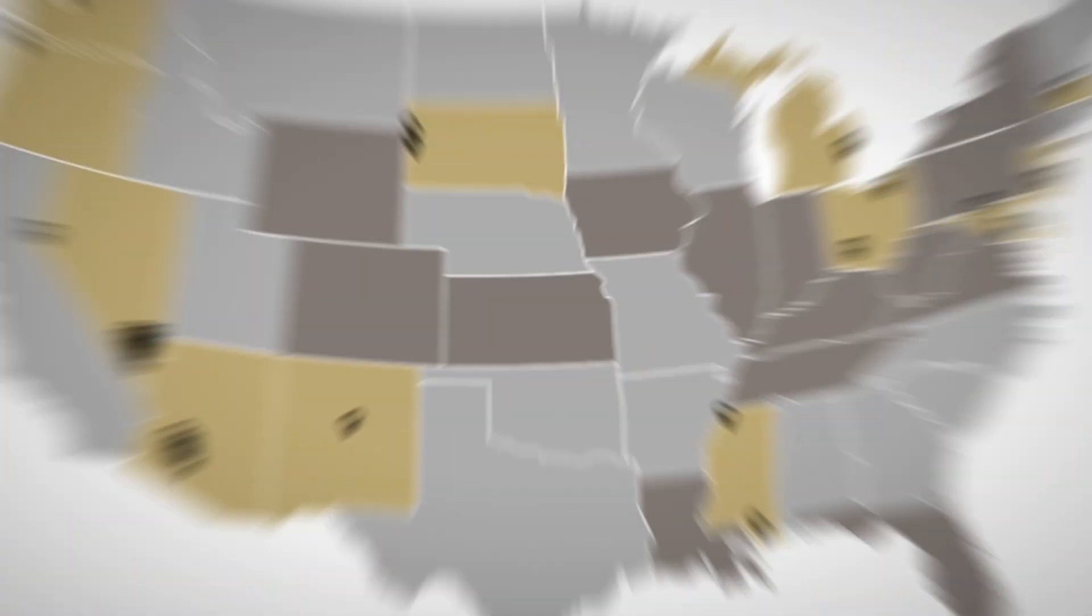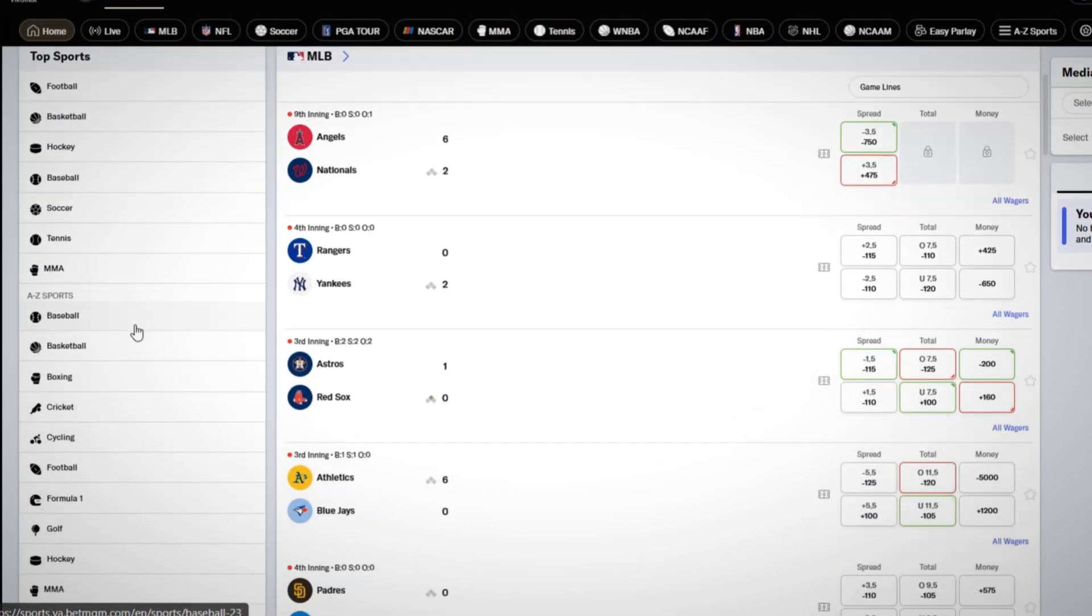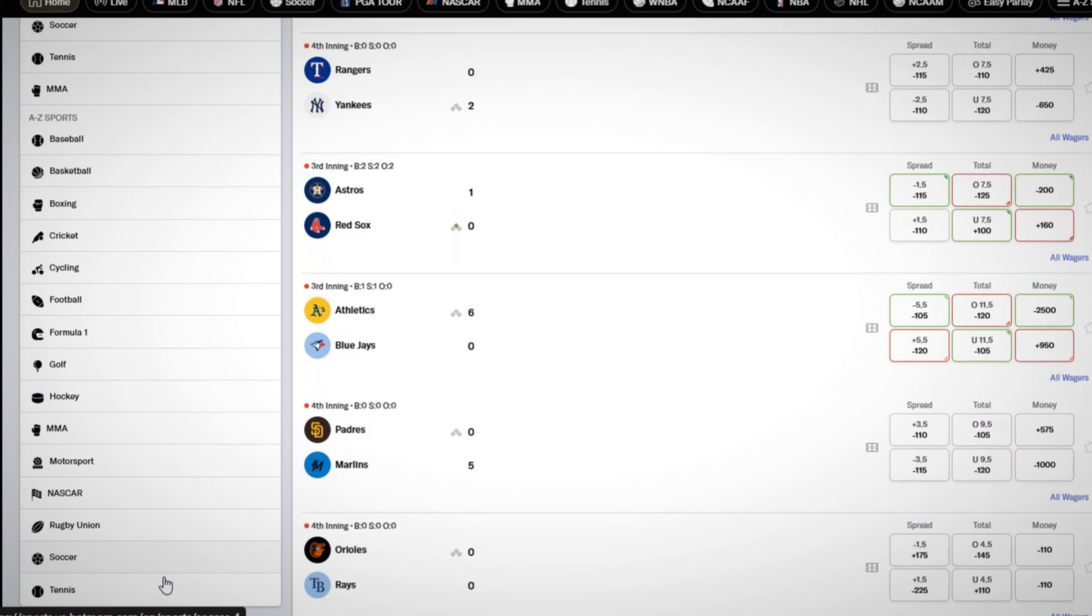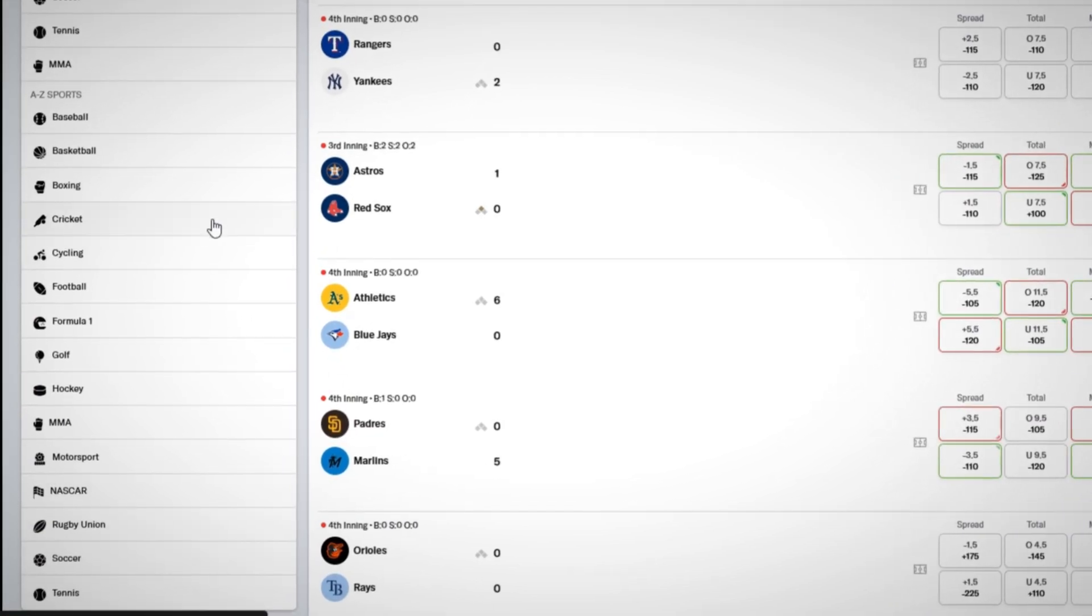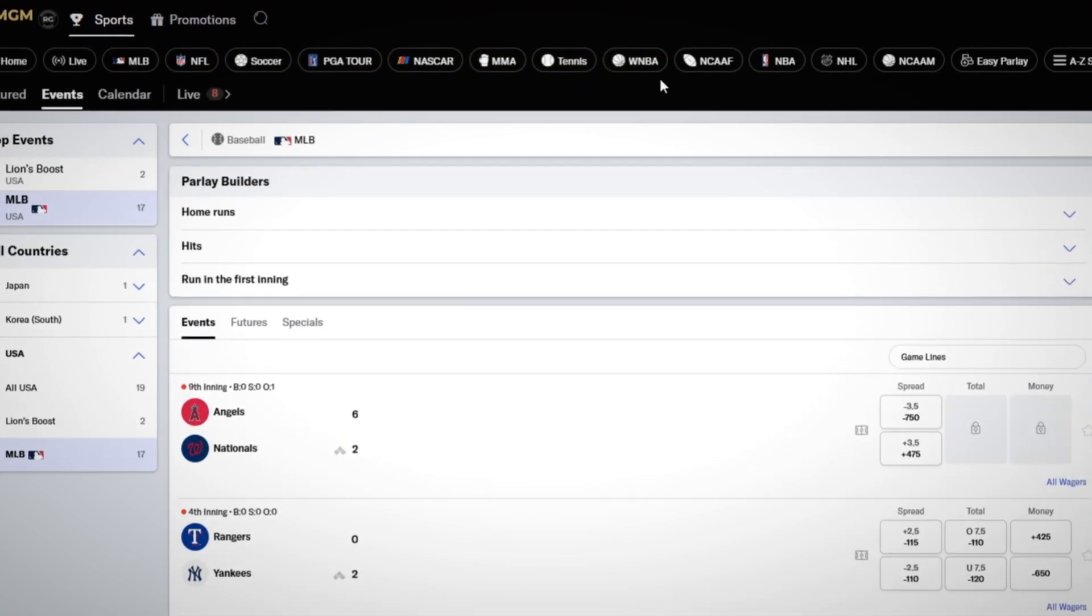Widely available in the United States, find your state in this screen right here. BetMGM counts with a wide sportsbook selection, including 26 different sports and all your favorite major U.S. leagues, such as the NFL, NBA, MLB, NHL, and MLS.